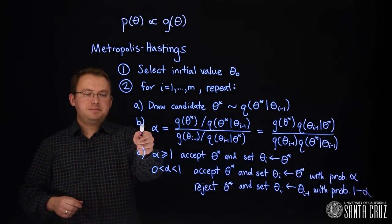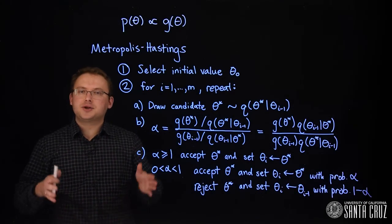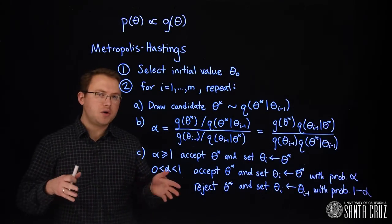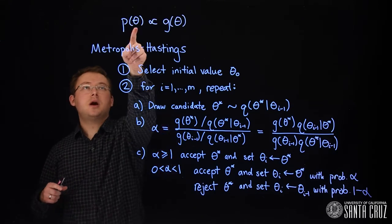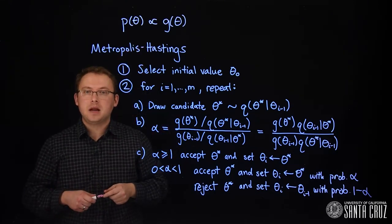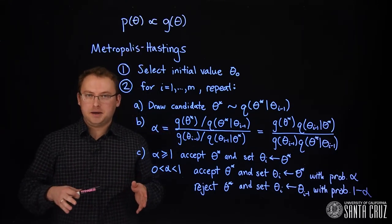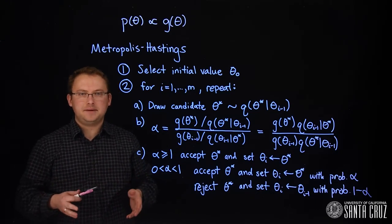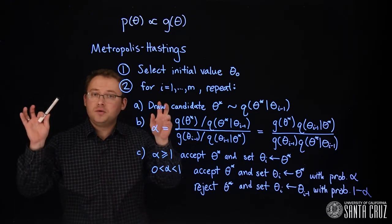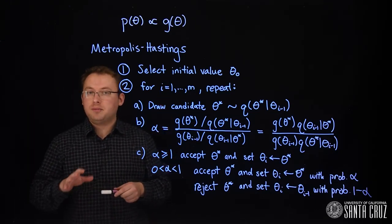These steps b and c act as a correction since the proposal distribution q is not the target distribution p. At each step in the chain we draw a candidate and decide whether to move the chain there or to remain where we are.